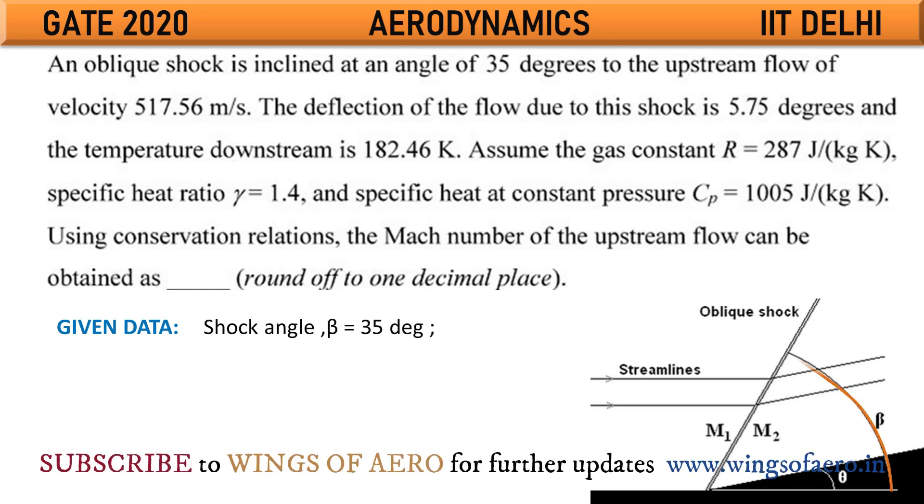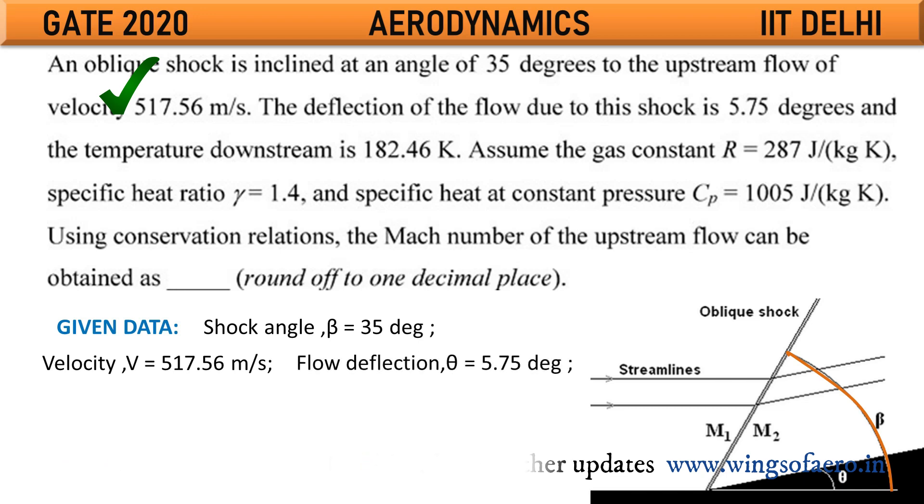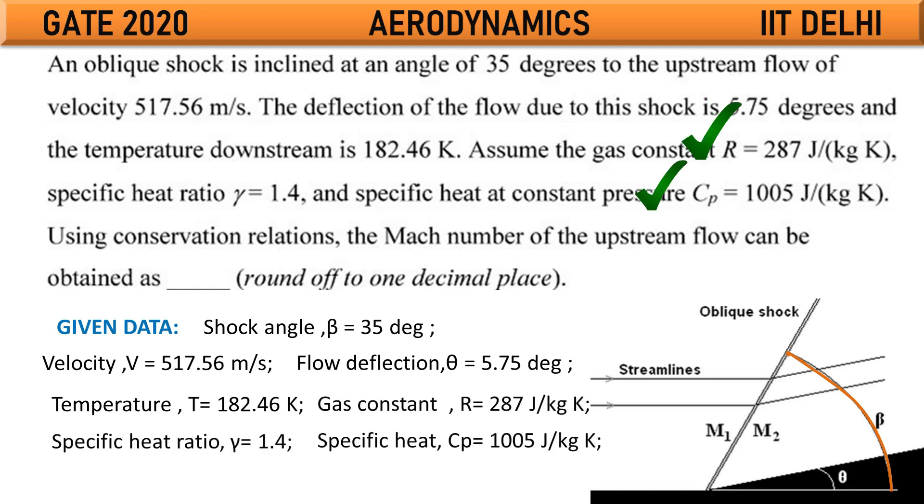They have first given the shock angle beta, 35 degrees. Then they have given the velocity 517.56 meter per second. Flow deflection theta, 5.75 degrees. Temperature 182.46 Kelvin. Gas constant, specific heat and specific heat ratio are also given.